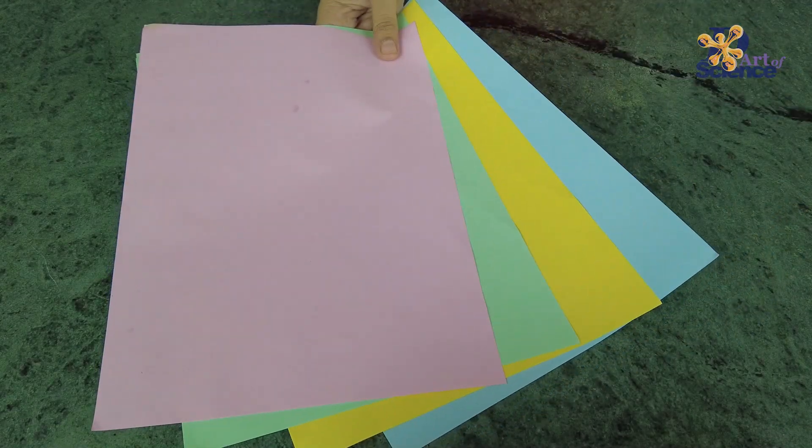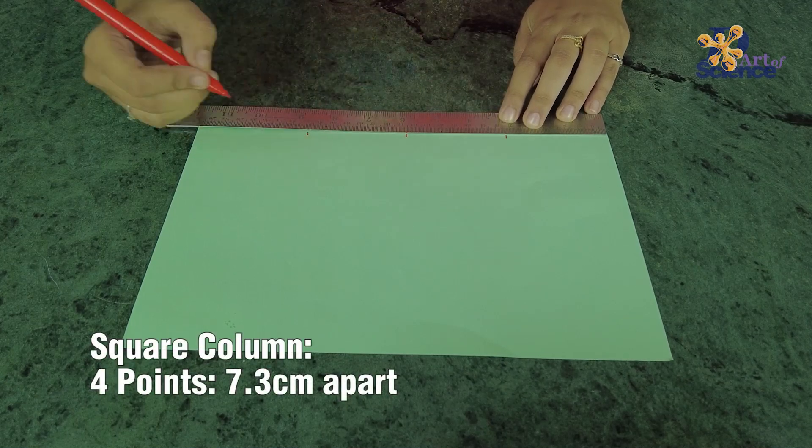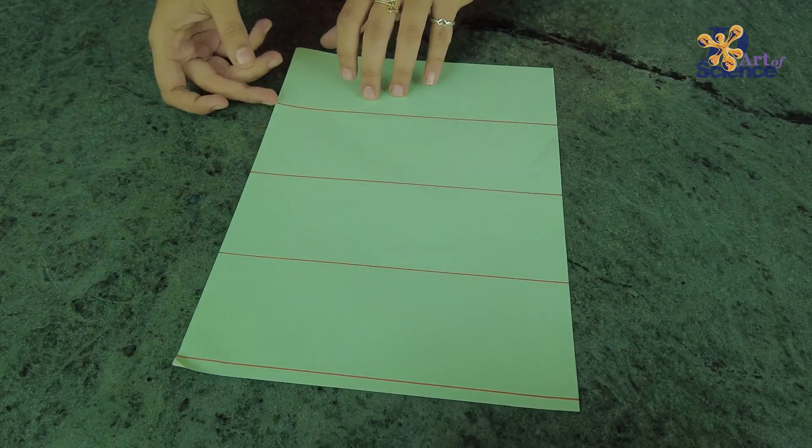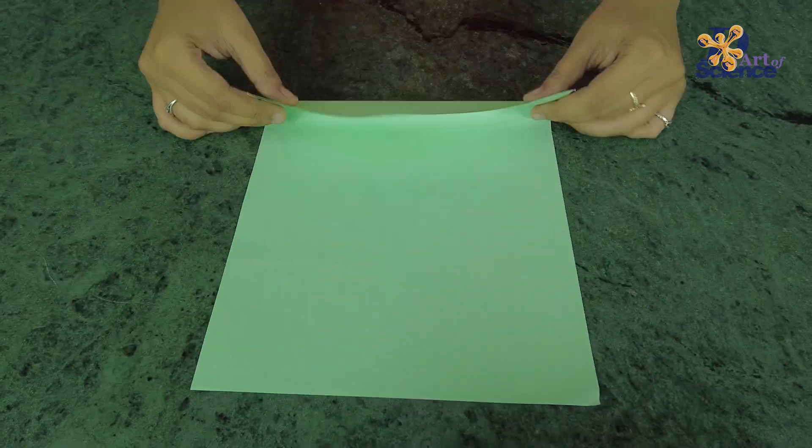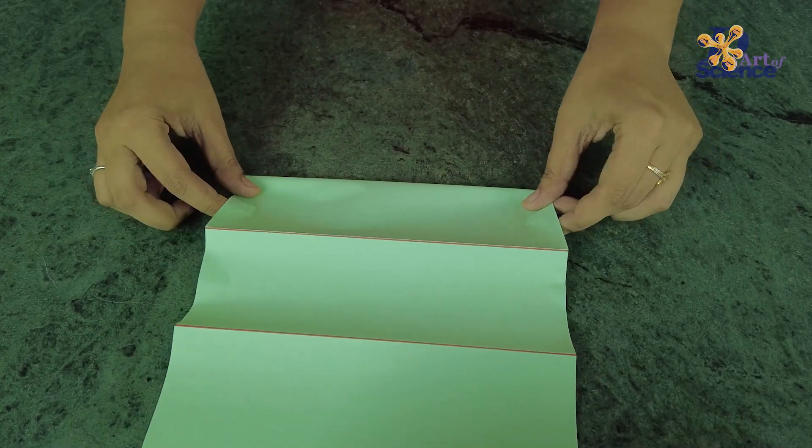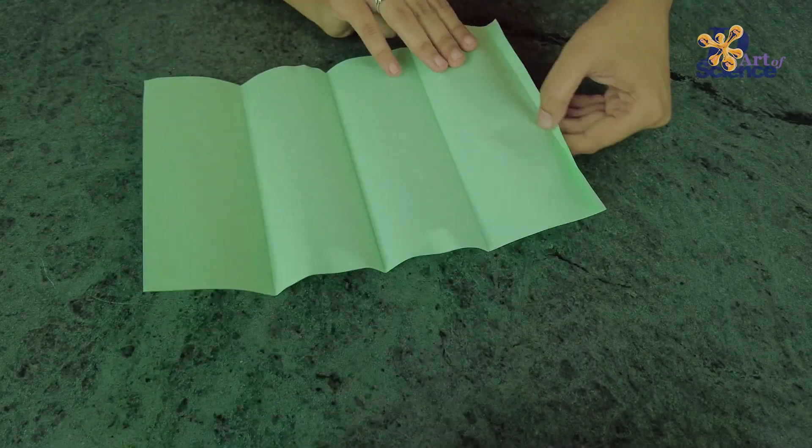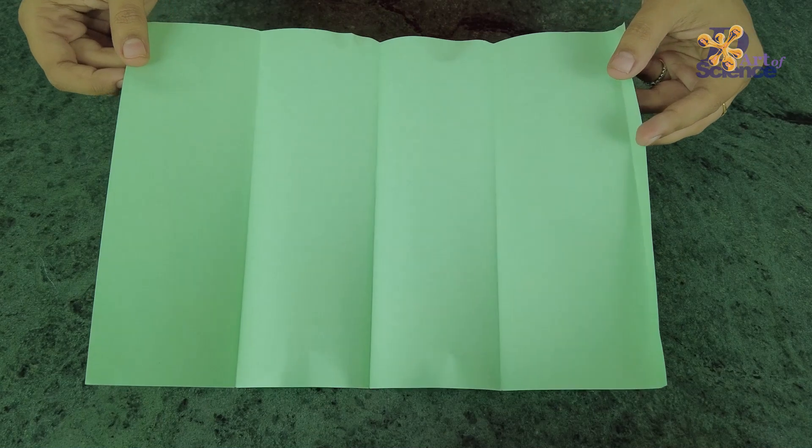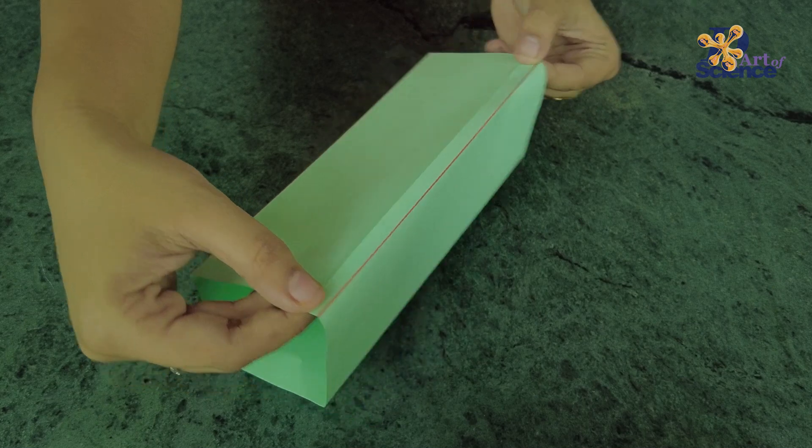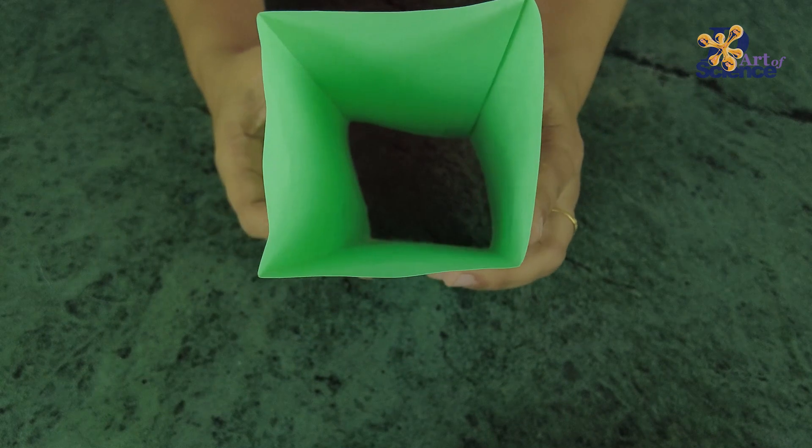take 4 papers to make different columns out of. To make a square column, mark 4 points 7.3cm apart along the length of the paper. Now fold the paper along these lines. This extra flap folds onto the first side to completely seal the column. Add a tape and seal it as shown. And your shape is ready!